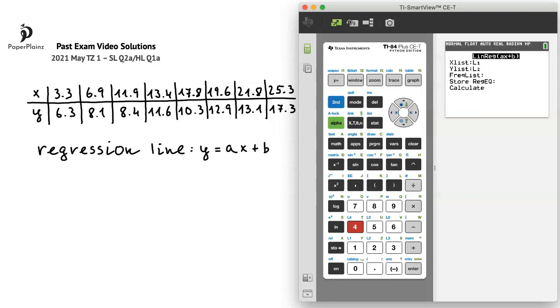On the next screen, we'll check our list numbers, which by default are correct. Our x values are in list 1, and our y values are in list 2, so we'll simply scroll down and choose calculate.